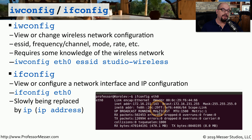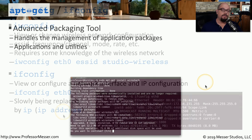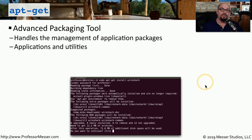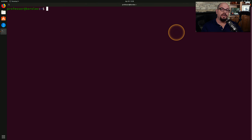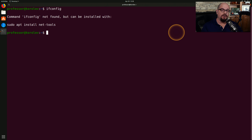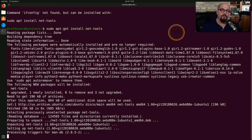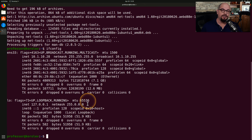With some Linux distributions, the ifconfig command is not available by default — those versions have migrated to the ip command, so you would use 'ip address' to view similar information. If a command you need isn't available, you can install it using apt-get, the advanced packaging tool, which installs and removes applications. Use 'sudo apt-get install package_name'. My Ubuntu distribution doesn't have ifconfig by default, but running 'sudo apt-get install net-tools' installs the package that includes it, and then 'ifconfig' is available to view IP information.